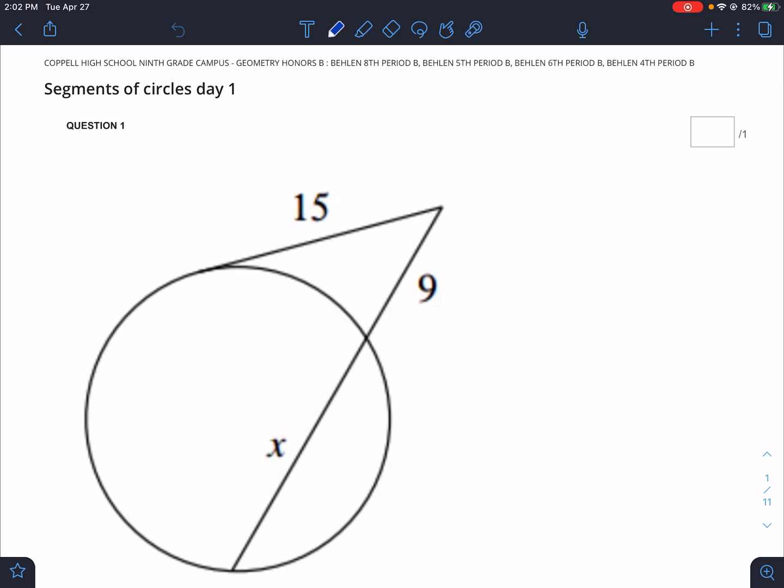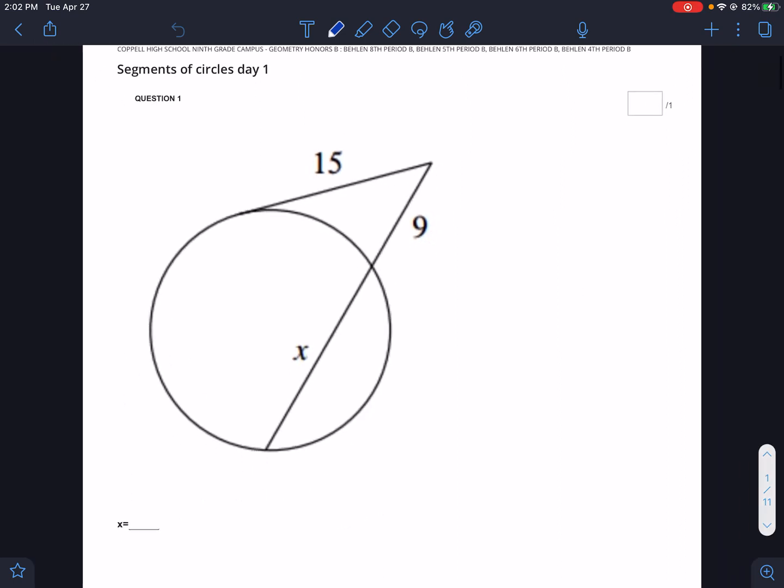The first one, we have a secant and a tangent, and the rules for these are outside times total equals outside times total. So what that would look like for the tangent is that the outside is the total, so we just square it. And for the secant, the outside part is 9, and the total is 9 plus x. So that would be 225 equals 81 plus 9x. Don't forget to distribute. So that means that 9x equals 225 minus 81, which is 144. So x equals 16. Crushed it.